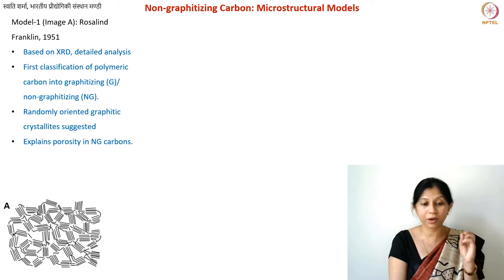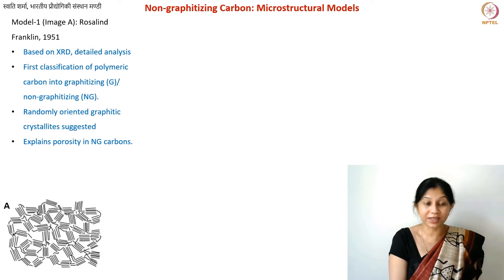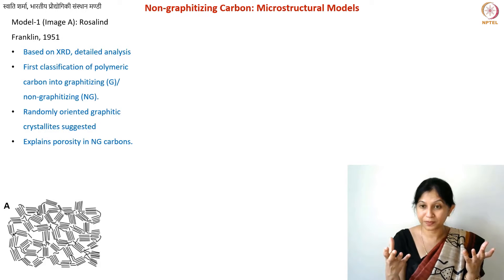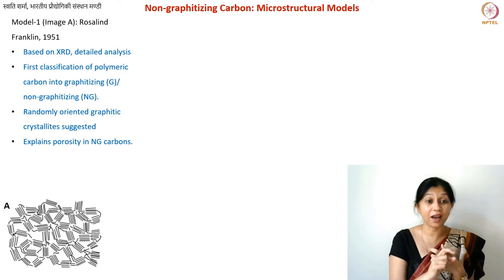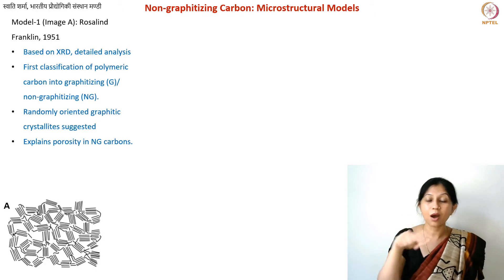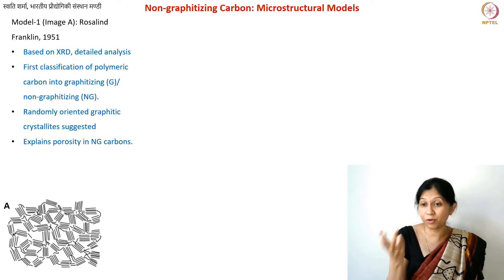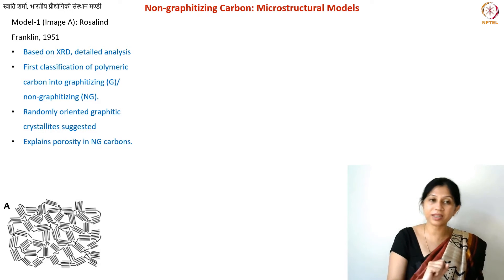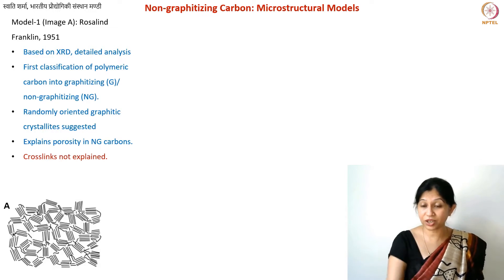If the material has lower-than-expected density but is not permeable, it must have closed pores. In the image, you can see empty space between the crystallite structures — these are responsible for the lower density, while the closed nature prevents any permeability. This was explained very well by Franklin's model. However, one limitation was that the nature of the links — the cross-links — between these crystallites was not explained.